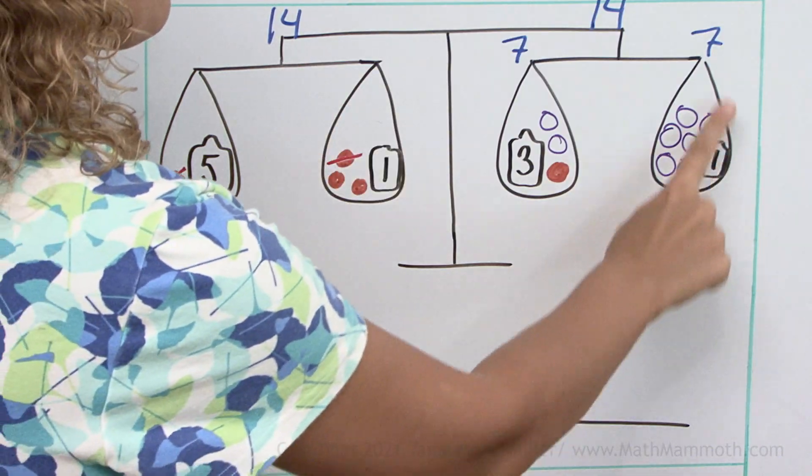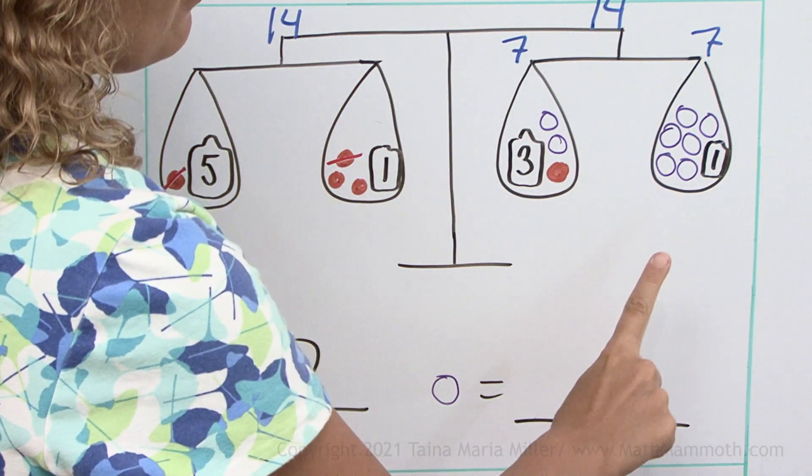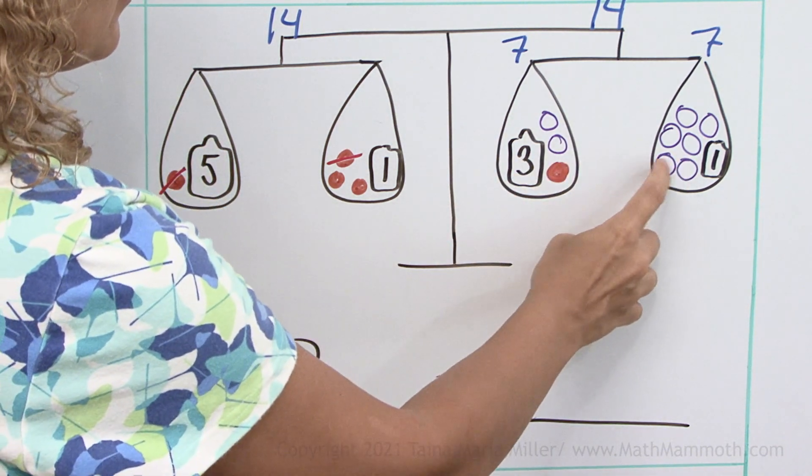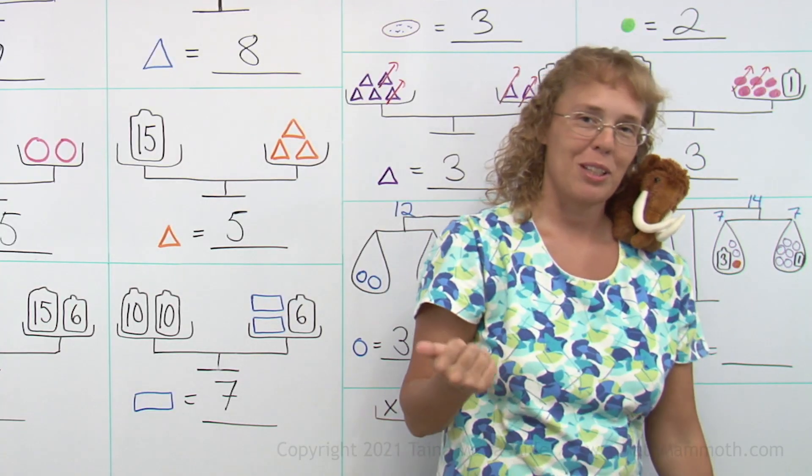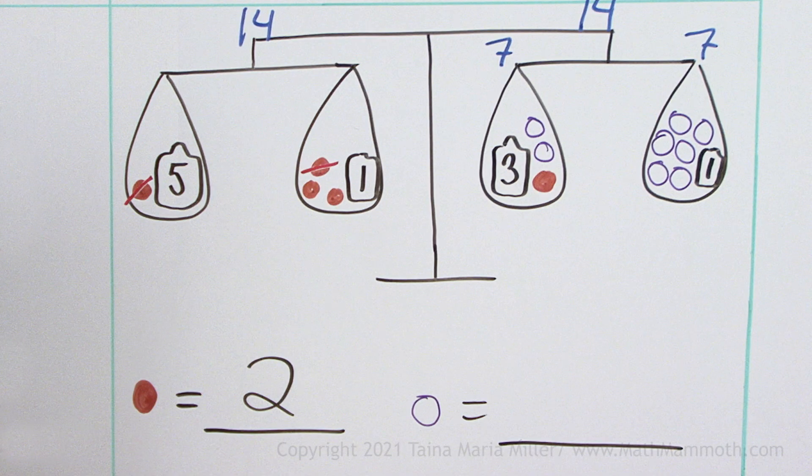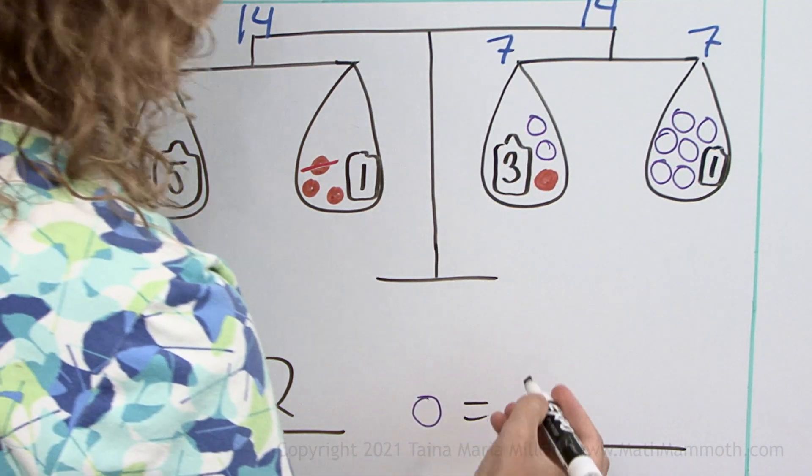Actually, we can only just look at this bag here to figure out the purple circle. Six of these plus one makes seven. So what do you think? Yep, one purple circle is one.